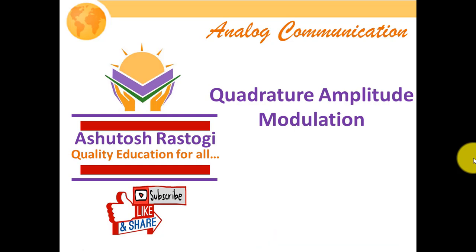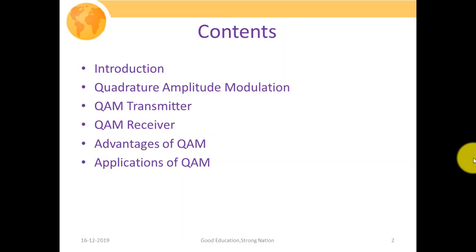In this particular lecture we are going to discuss about quadrature amplitude modulation. These are the guidelines of today's lecture. We will start with the introduction, then briefly discuss quadrature amplitude modulation, then discuss how we generate a QAM signal using a QAM transmitter, then about the QAM receiver — how we receive or detect the QAM signal — followed by the advantages and applications of QAM.